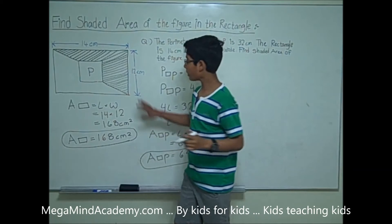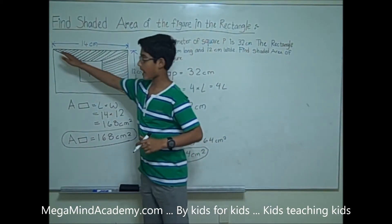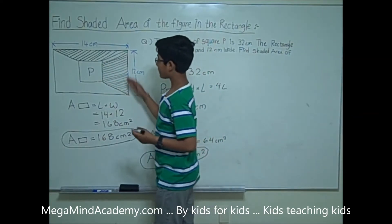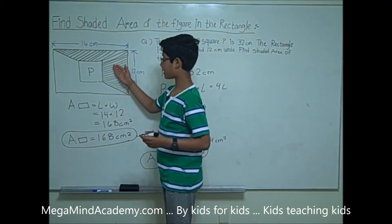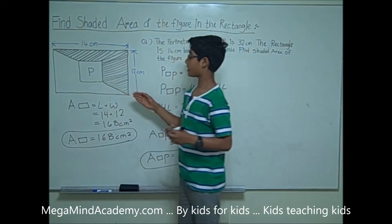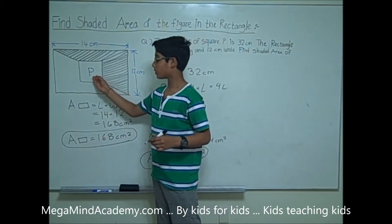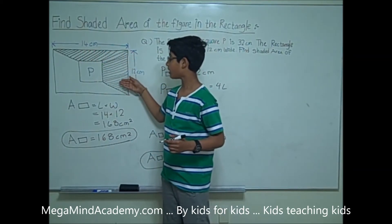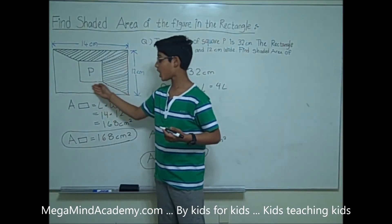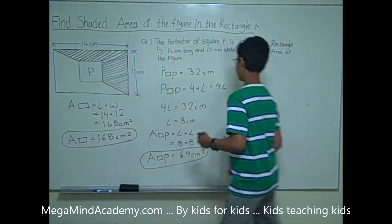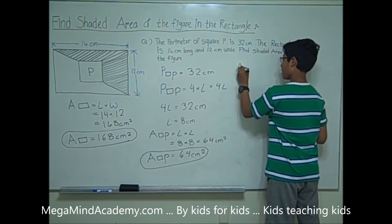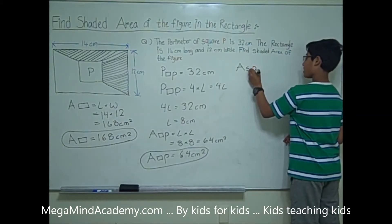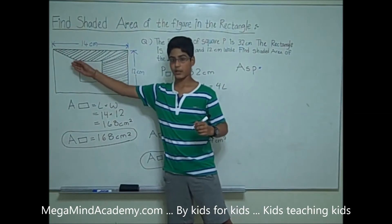Now, when we take away square P, there is a diagonal line that cuts through the rectangle. It divides the rectangle into two halves — this side and this side. Because square P is a square, the shaded part of the rectangle is equal to the unshaded part of the rectangle.